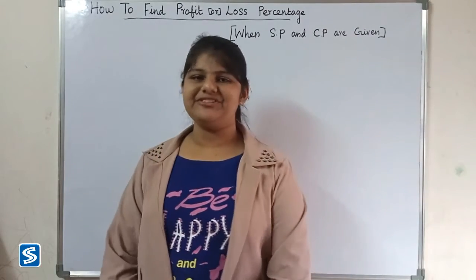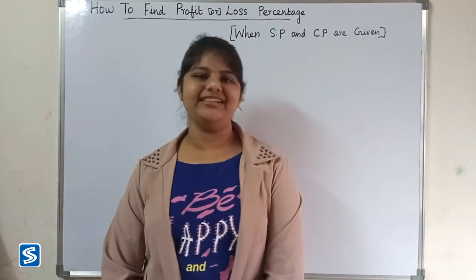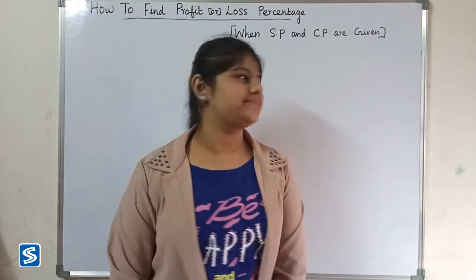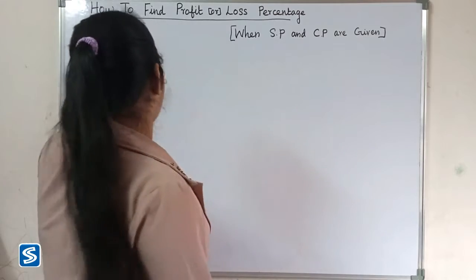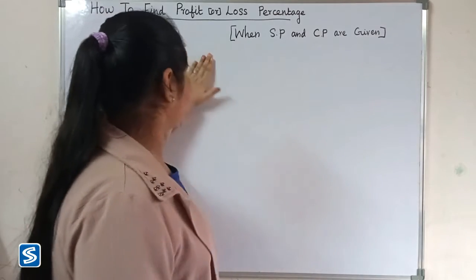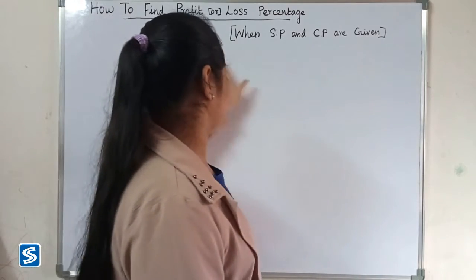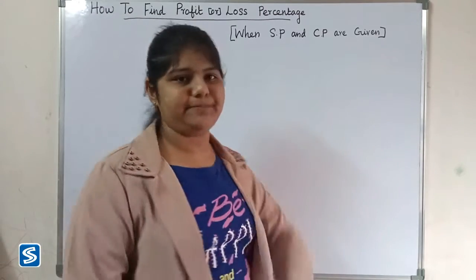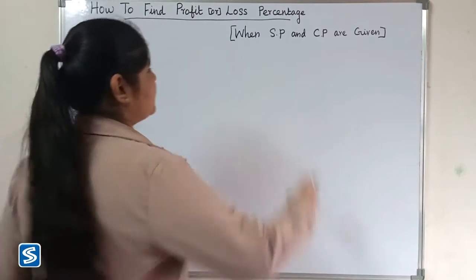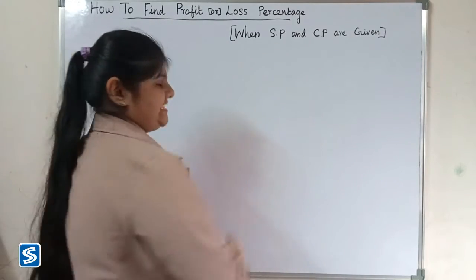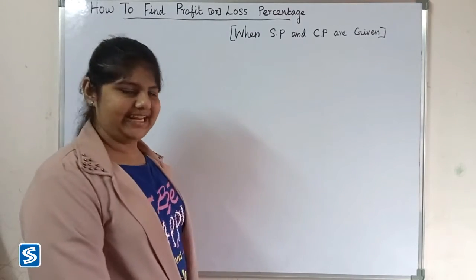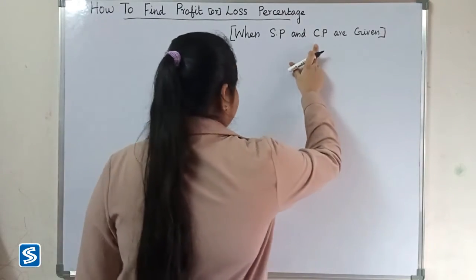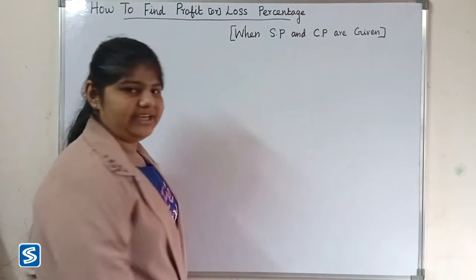Hi friends, welcome to this channel. In this video I am going to teach how to find profit or loss percentage when selling price and cost price are given. SP is nothing but selling price and CP is nothing but cost price.